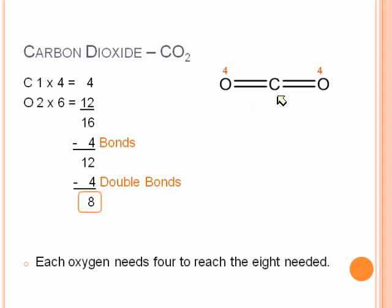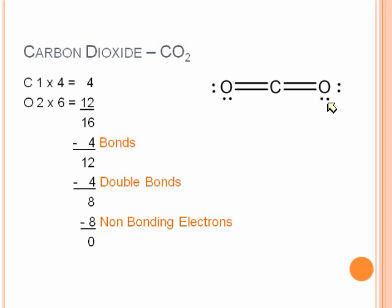We'll reevaluate the octet rule and see if doubling the bonds helped us. The carbon is fine, because it has four bonds or eight electrons. Each oxygen has two bonds or four electrons, so they need four more apiece for a total of eight. So now we have enough electrons to fill in our non-bonding pairs. And when we do that, we get non-bonding pairs on each oxygen. Subtracting that from our total gives us zero left. The octet rule is satisfied for each element, so we can say that is a correct structure for carbon dioxide.